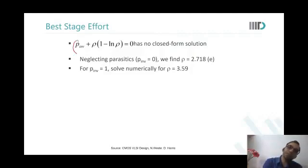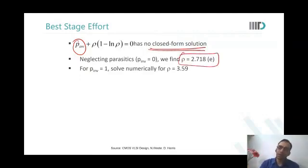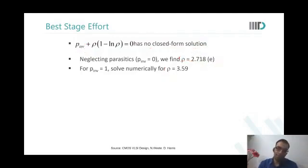So because of the presence of parasitics, as I said, it has no closed form solution. If parasitics were zero, then I know that rho, that is stage effort for every stage is E. But if I say that P the parasitic is one unit, then you will see that rho would come out, its each stage's stage effort would come out to be around 3.6.